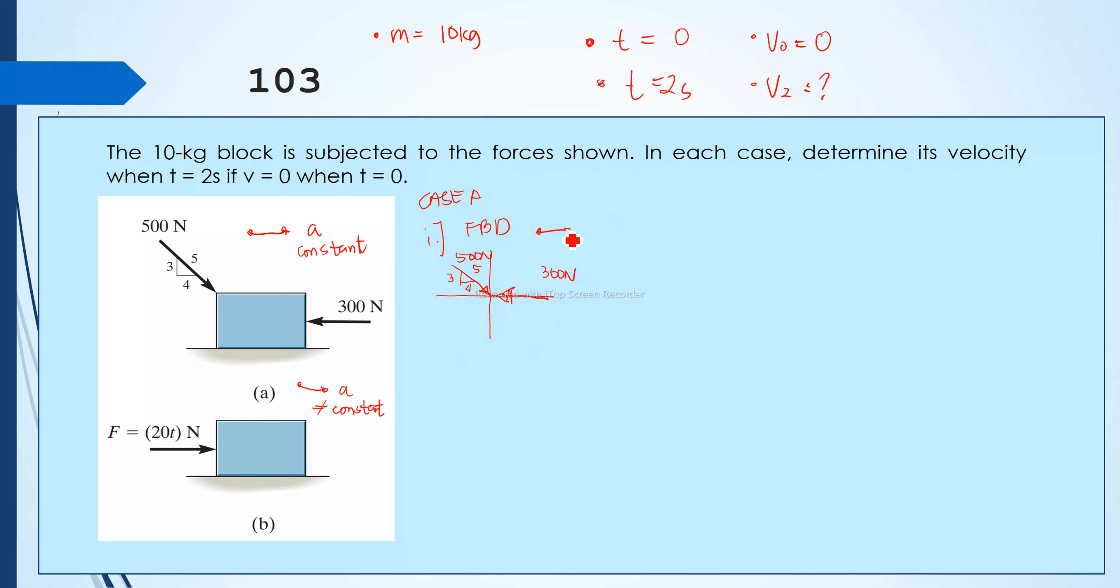And again, acceleration is towards the right. Our assumption is this acceleration towards the right. Next is we sum force along x is equal to mass times acceleration towards the x. And then positive along towards the right, so we have 500 cosine theta minus 300 is equal to 10 times the acceleration towards x.